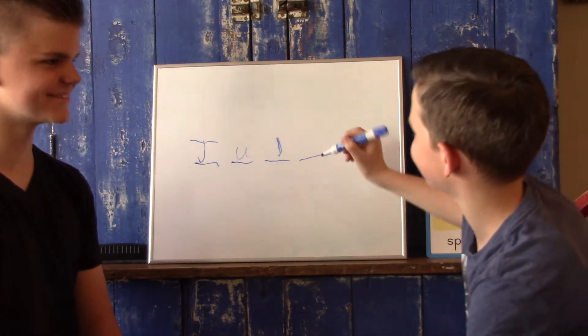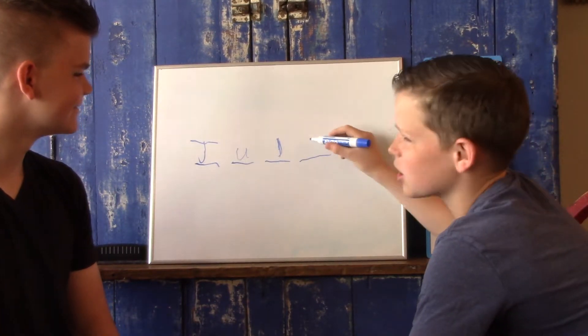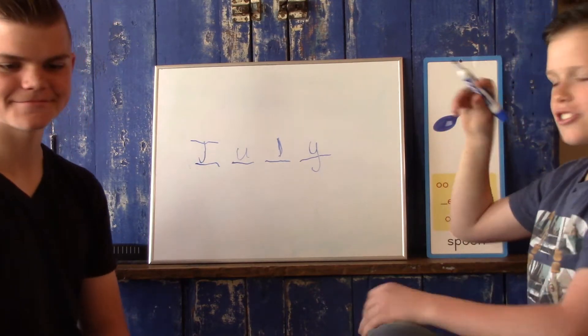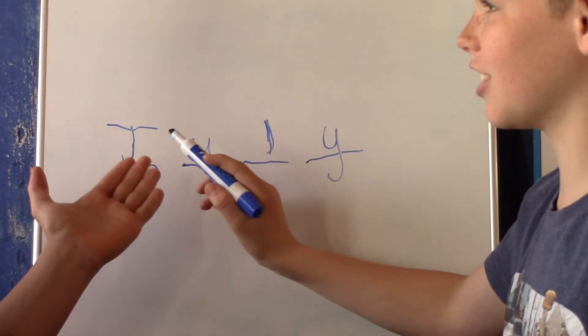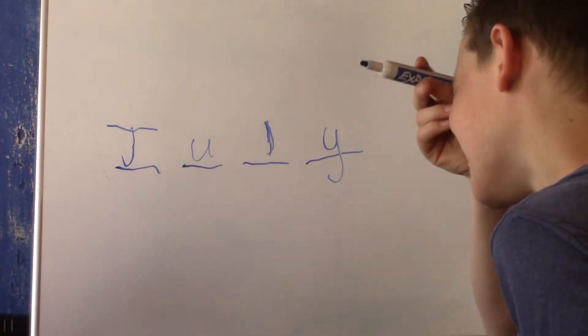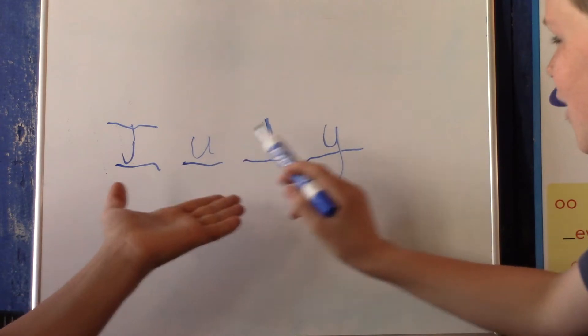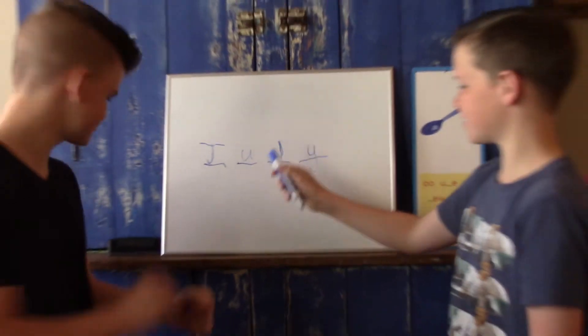And what's the fourth sound in July? Y. No. Sound. I. Sorry. Yeah, and that's a Y. Yes. There we go. So, let's spell it out. Combine word. J. July. Go. J-U-L-Y. July. Okay. Erase it. Go to the next word.